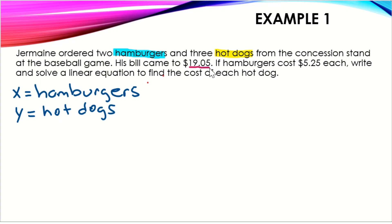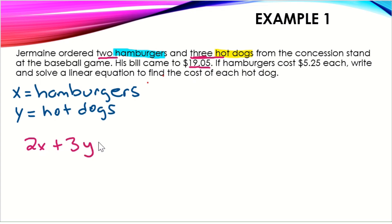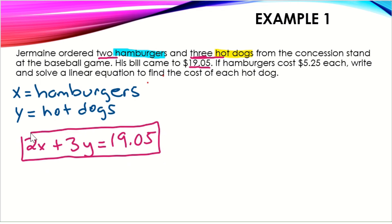Now let's write our equation. He spent a total of $19.05 and bought two hamburgers and three hot dogs. Two hamburgers — our variable is X — gives us 2x. Three hot dogs — our variable is Y — gives us plus 3y. And the total is $19.05. So our equation is: 2x + 3y = 19.05.